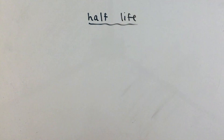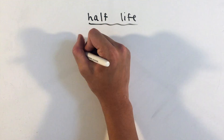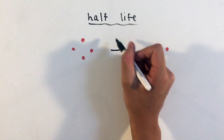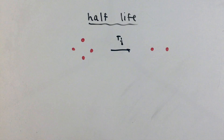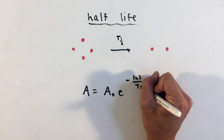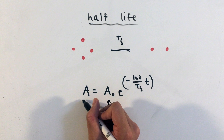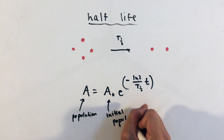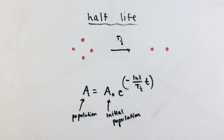Another topic related to atomic and nuclear physics is radioactive decay, or the natural decay of certain unstable isotopes of certain elements. The time measurement used in these problems is known as the half-life, or the time it takes for a sample of some radioactive substance to decay by half. The mathematical model that describes radioactive decay is an exponential decay based on the initial population as well as the half-life.